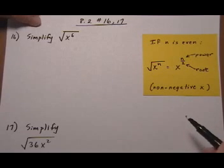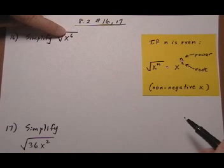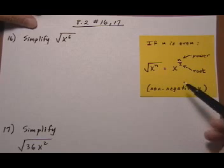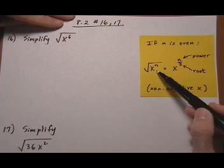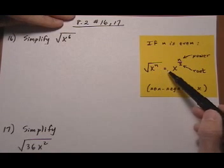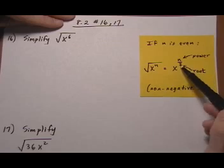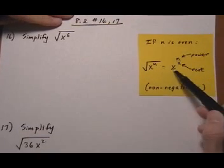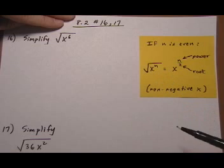So when you have variables, let's first look at when the power of the variable is even. So if you have an even power and you're taking a square root of it, then what you can do is divide the power by the root, which is 2 because it's a square root, and that gives you what comes out. And this is again for non-negative x.